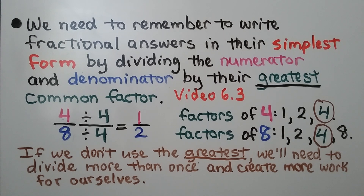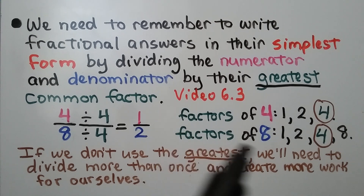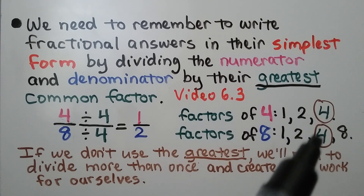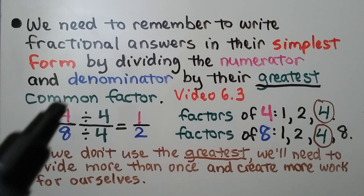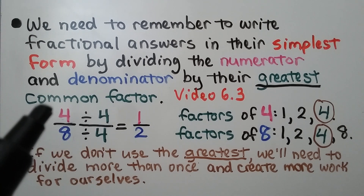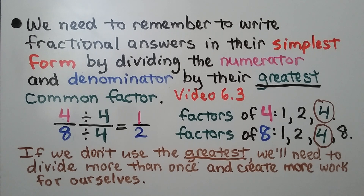We need to remember to write fractional answers in their simplest form by dividing the numerator and denominator by their greatest common factor. We learned how to do this in video 6.3. For example, if we have 4/8, we list the factors of 4 and 8, choose the greatest common factor — which is 4 — and divide both the numerator and denominator by 4. So 4 divided by 4 is 1, and 8 divided by 4 is 2, making 4/8 equal to 1/2. If we don't use the greatest common factor, we'll need to divide more than once.